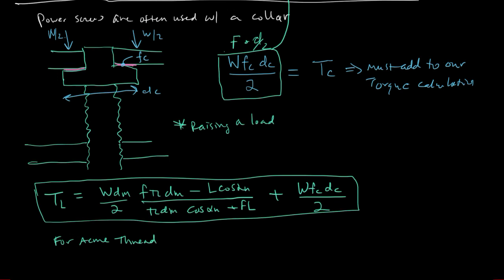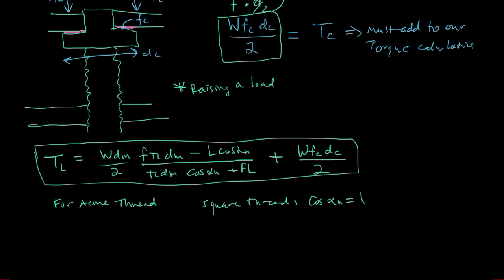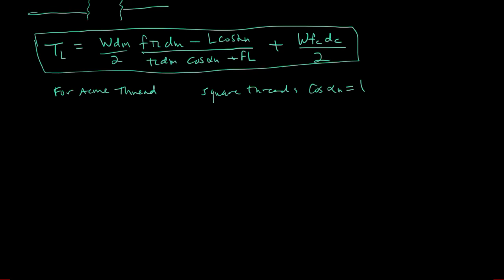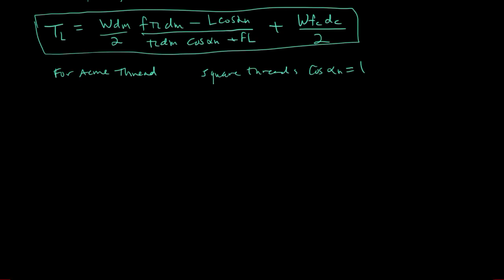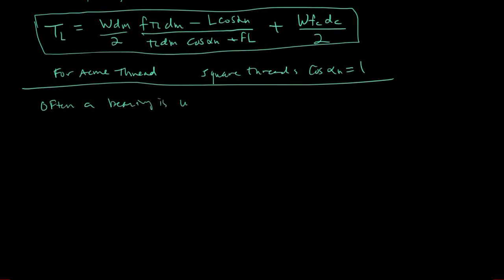For square threads, the math is a little simpler because the thread angle is zero, so cos(alpha_n) = 1, and the expressions with cos(alpha_n) just become one. Often a thrust bearing — such as a ball or roller thrust bearing — is used in the collar. If a bearing is used, we treat the collar friction as approximately zero.